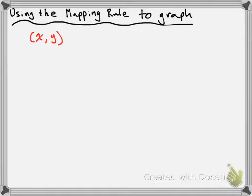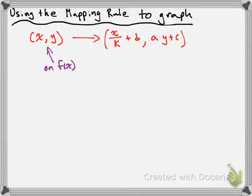So let's say we have a point x, y, and this is going to be a point on our parent function f(x). The mapping rule is that I can take that point x, y and turn it into the point x over k plus d, and then a times y plus c. So if I take the a, k, d, and c values of my transformed function, I divide the x value by k and add d to get the new x value, and I multiply the y value by a and add c to get the new y value. This will be a point on my transformed function g(x).